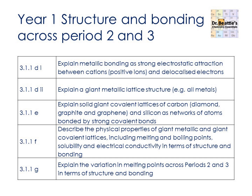At the end of this video, we've concluded looking at variations in melting points across periods 2 and 3 in terms of structure and bonding. To get to that point we've had to understand the different types of bonding and structure that occur, such as metallic, ionic, giant covalent and simple molecular. If you found this video useful, please like the video and subscribe to the channel so that you can get updated videos covering A-level chemistry in a simple and easy way.